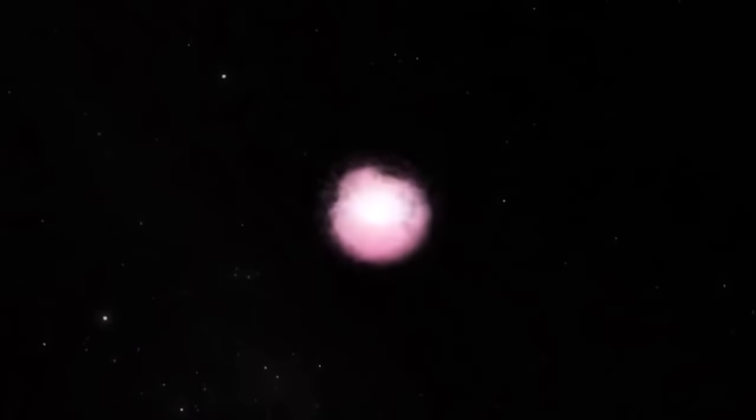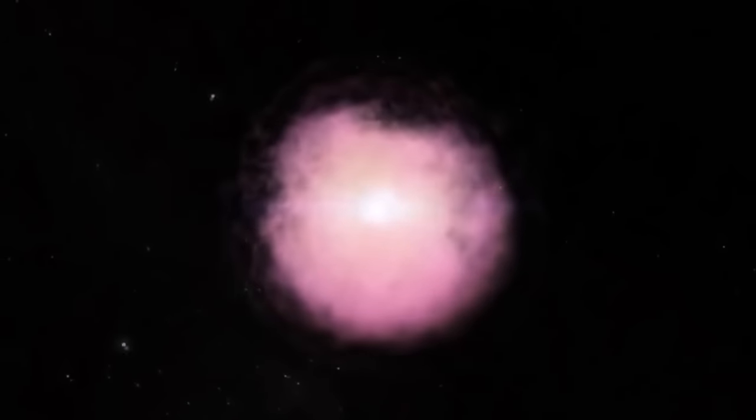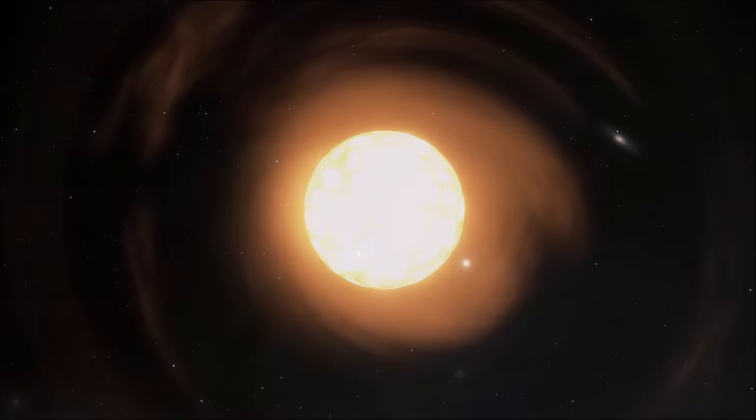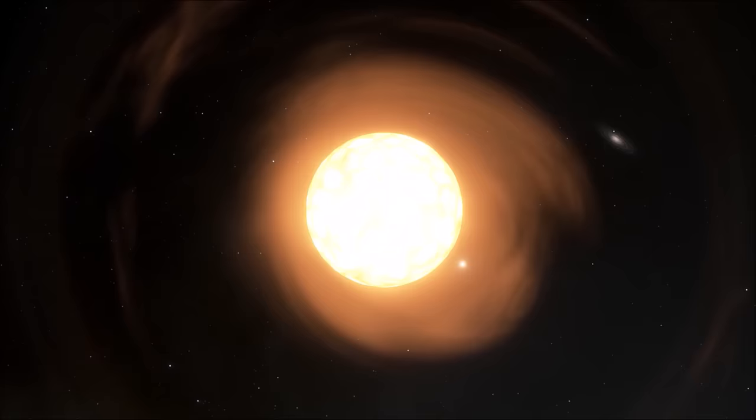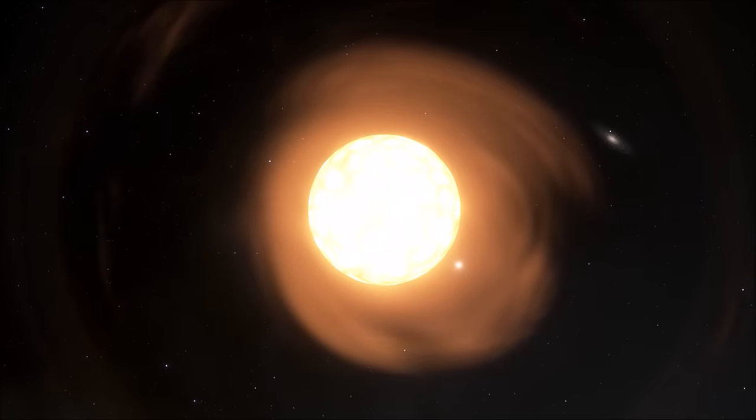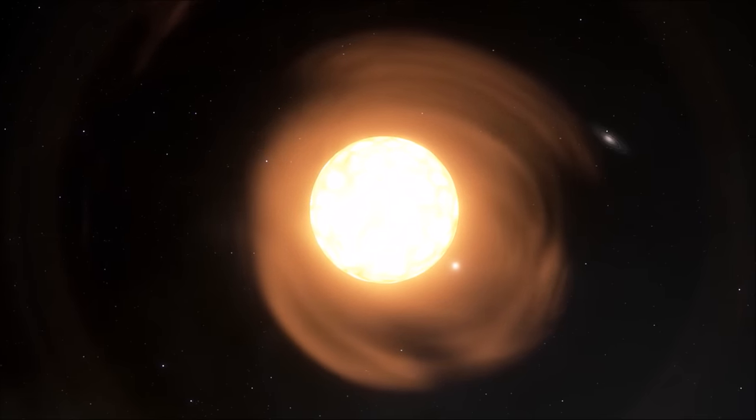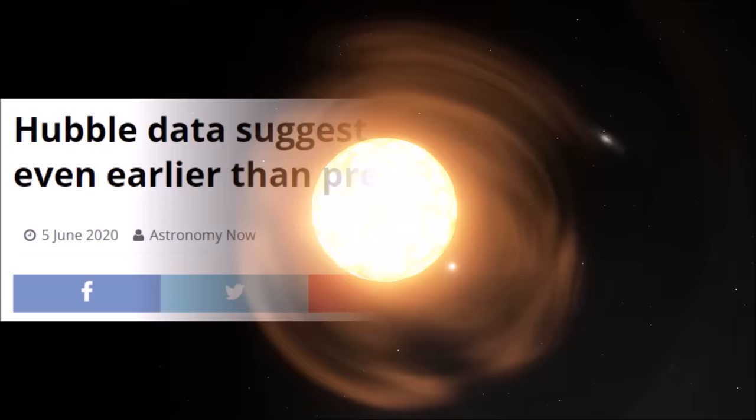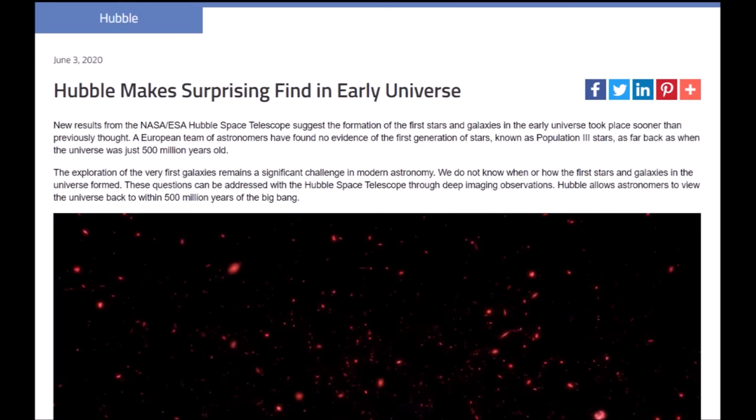These explosions released the metals fused in the cores of these stars and distributed them into the surrounding space, creating richer gas clouds from which more stable stars with higher metallicities could form. The reason they are classed as Population 3 stars is because of the order they were classified in. Population 3 stars were first predicted in the mid 20th century, and ever since we have long struggled to obtain proof of their existence.